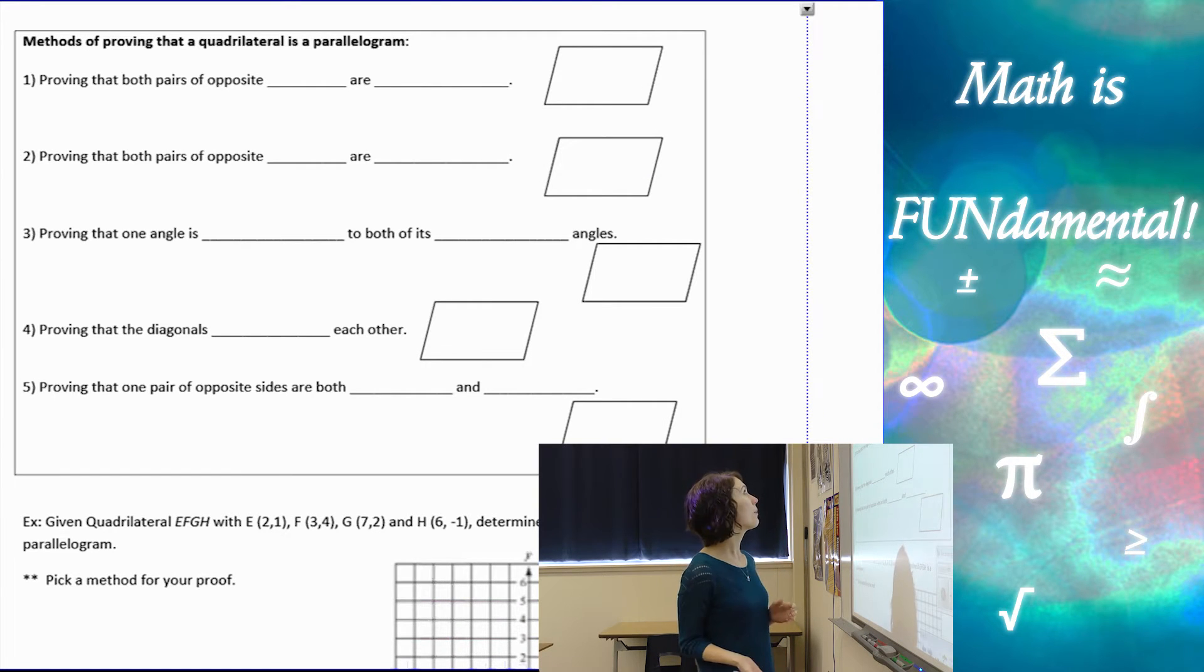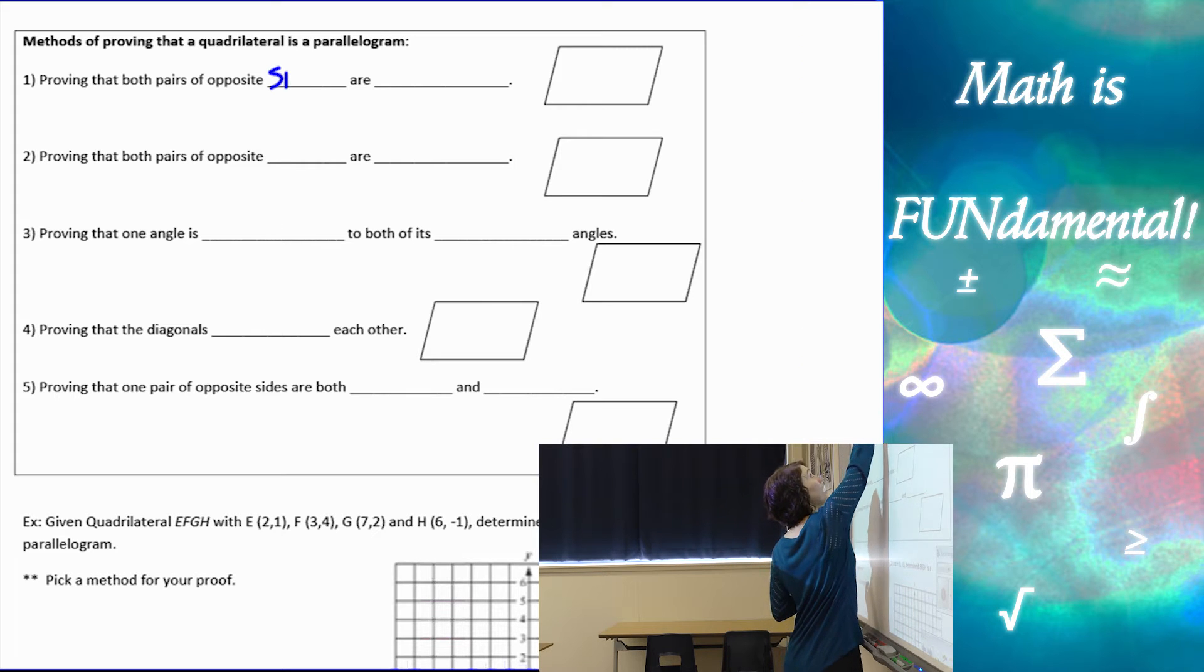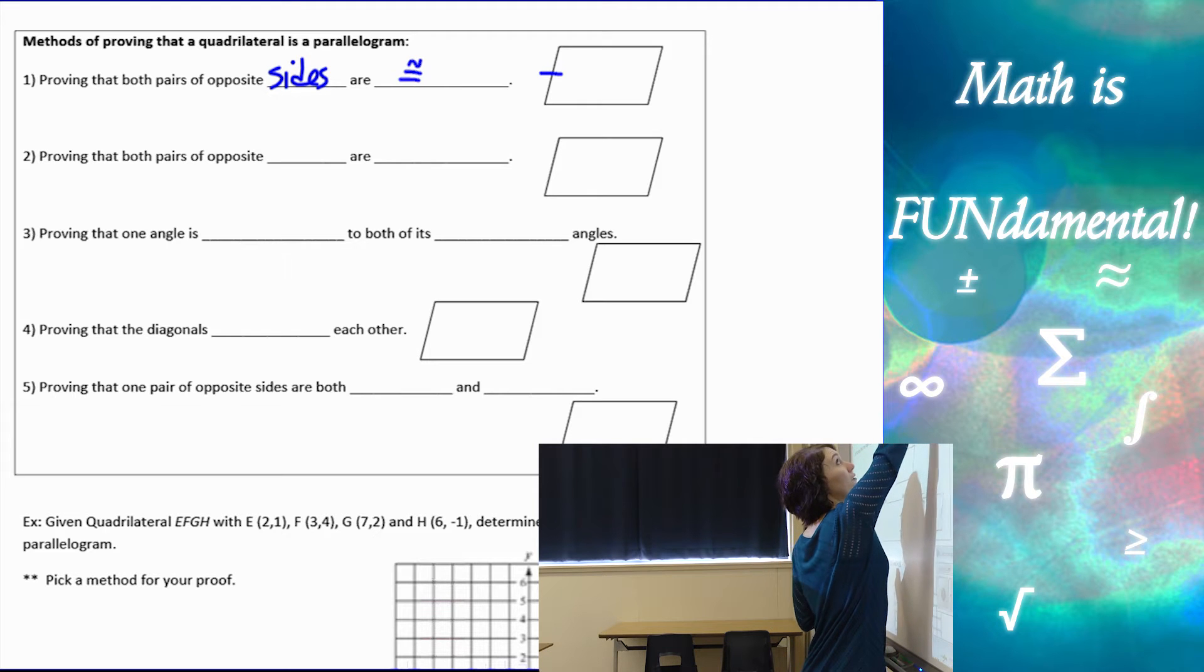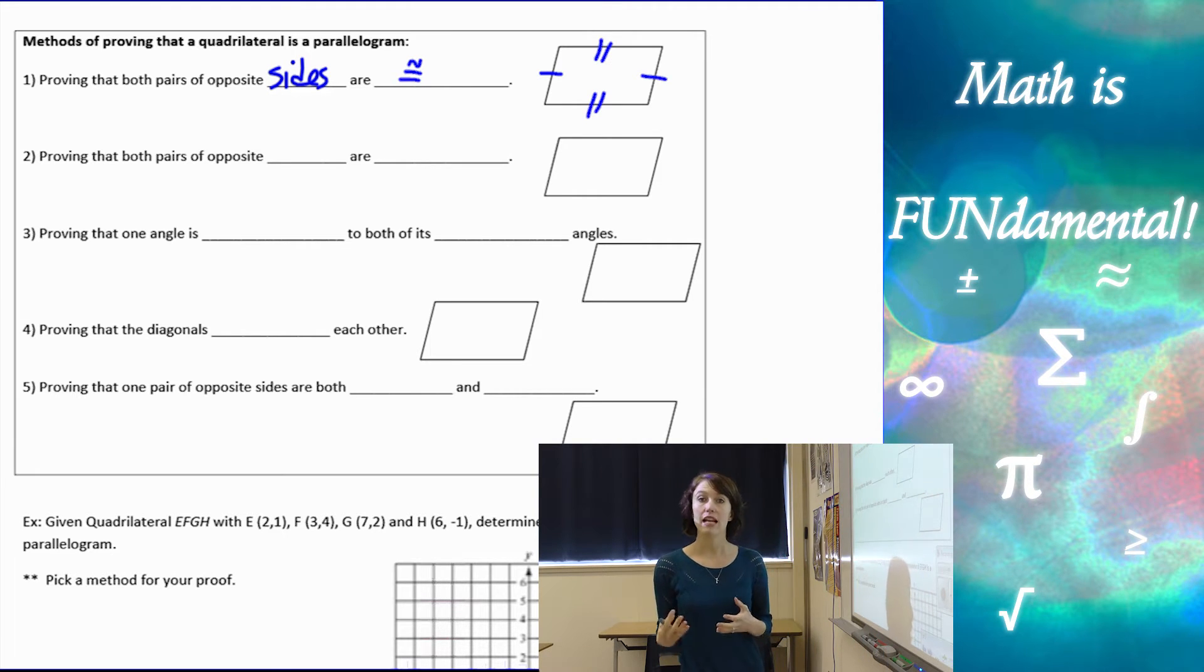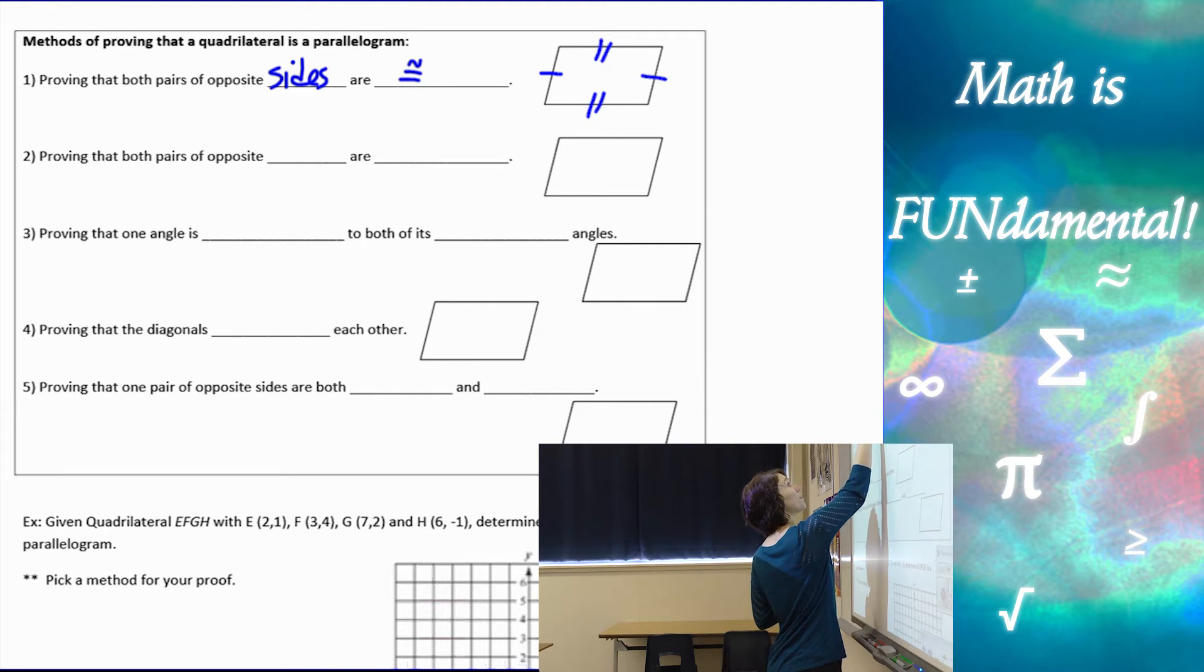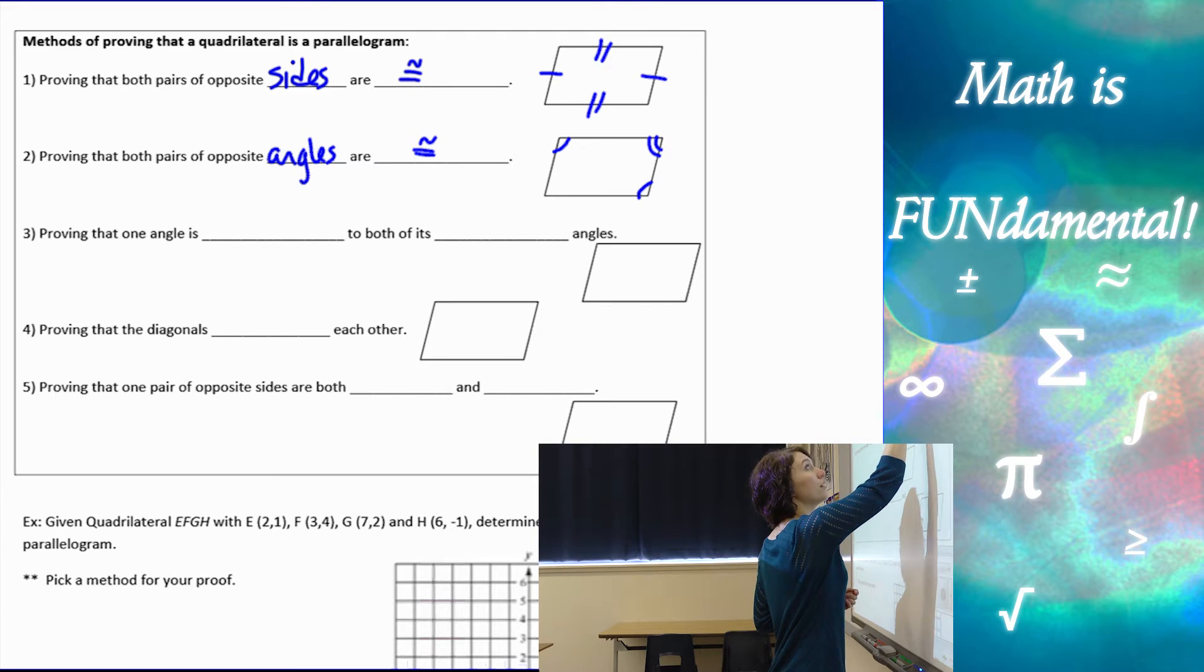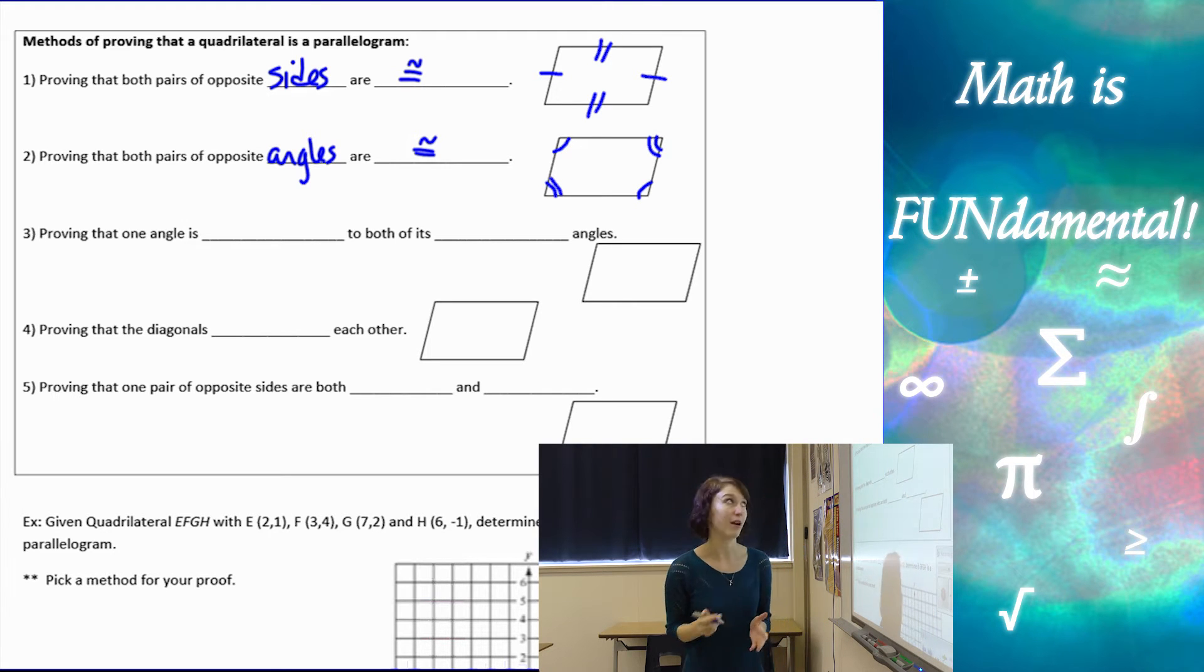The first method is to prove that both pairs of opposite sides are congruent. If I can prove this is true, then it has to be a parallelogram. The second method is to prove that both pairs of opposite angles are congruent, and that would also have to be a parallelogram.